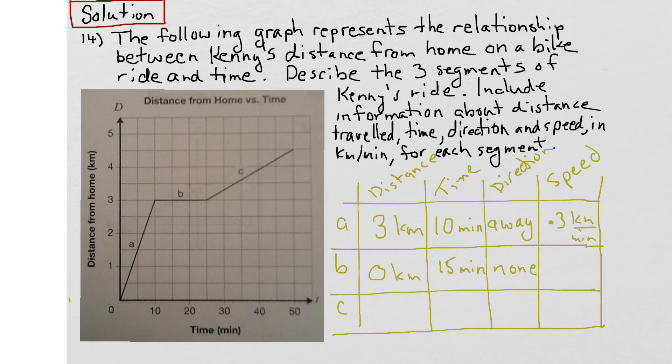And then speed. Speed again is distance over time. So, zero kilometers in fifteen minutes. Zero divided by fifteen is zero. We can just write this as zero kilometers per minute.